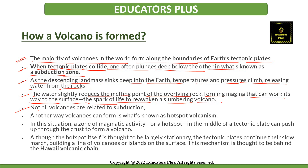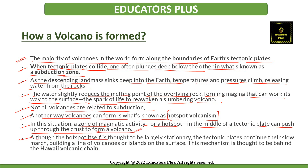This is the spark that can reawaken a slumbering volcano. Not all volcanoes are related to subduction — another way volcanoes form is known as hotspot volcanism. In this situation, there is a zone of magmatic activity, a hotspot, in the middle of a tectonic plate that can push up through the crust to form a volcano. Although the hotspot itself is largely stationary, the tectonic plates continue their slow march, building a line of volcanoes or islands on the surface. This mechanism is thought to be behind the Hawaii volcanic chain.